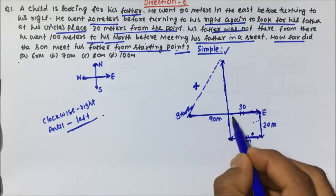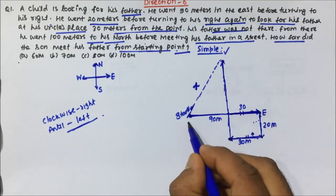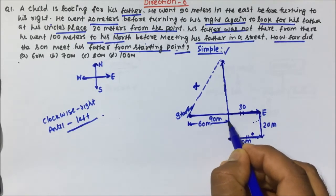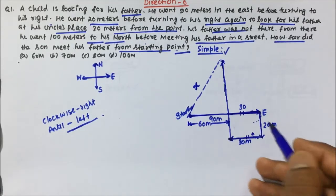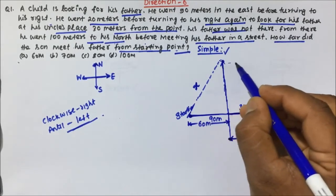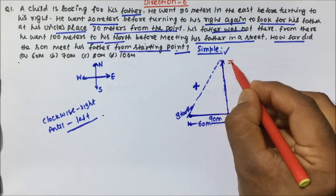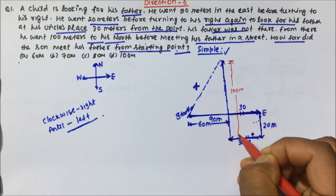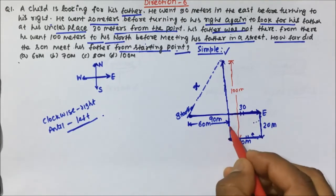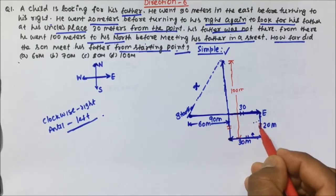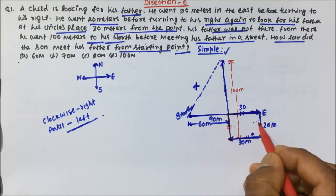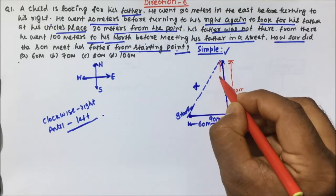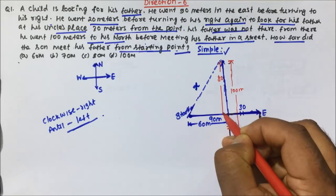This distance is 30, so the parallel distance will also be 30 meters. Now this distance will be 60 meters. The total vertical distance is 100 meters, and since this parallel line is 20 meters, this distance becomes 80 meters.